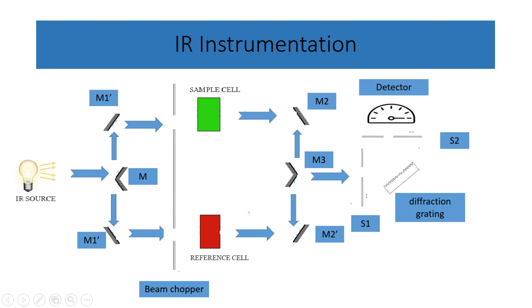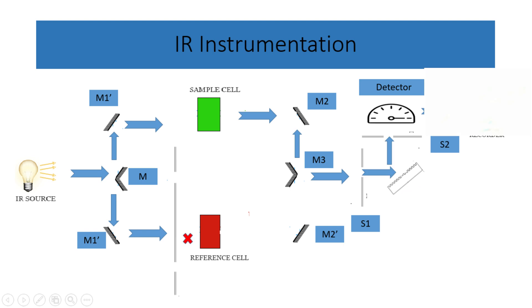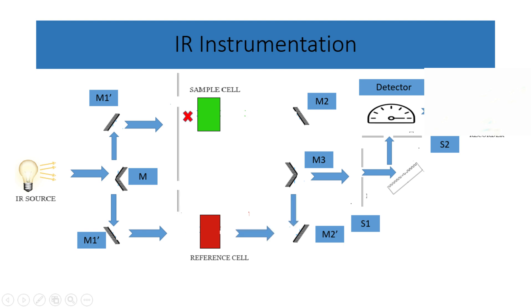Afterward, the beam chopper directs the sample radiation toward the detector while the reference radiation is blocked. The sample radiation goes through the same steps as the reference radiation and reaches the detector. This alternating process continues throughout the analysis.